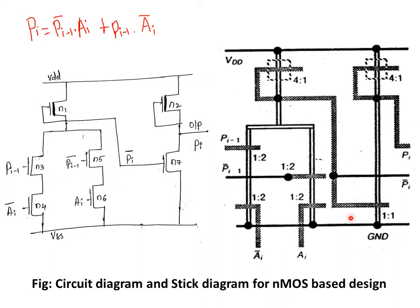For the inverter in NMOS design, at the pull-up network draw one depletion-type NMOS transistor, and at the pull-down network only one NMOS transistor is required. Finally, we get the correct output at that node. Coming to the stick diagram: the first step is to draw two rails, that is VDD and VSS.